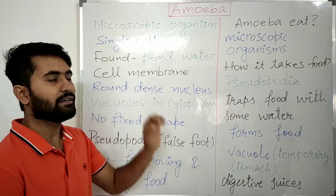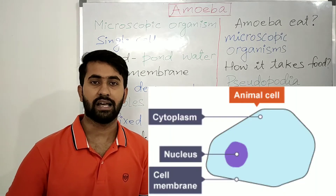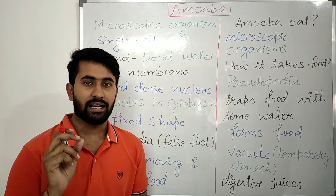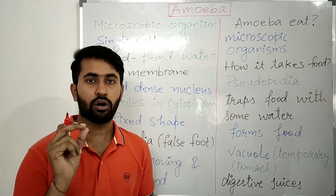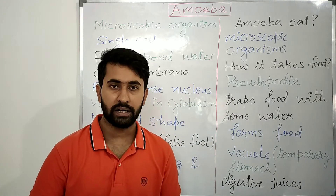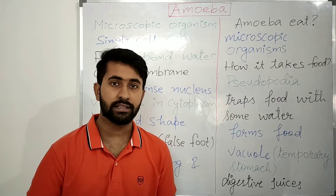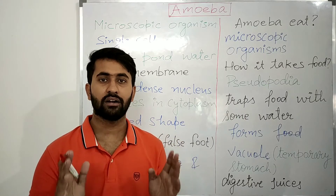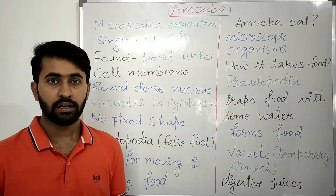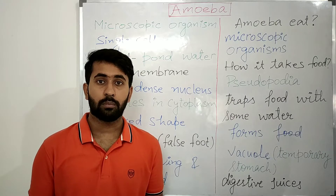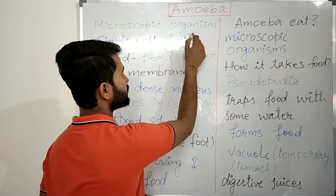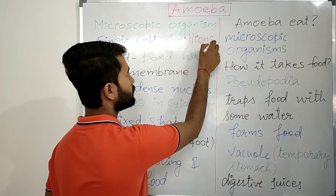Amoeba has a single cell. It is made up of a single cell. A cell is the building block of life — like buildings are made up of bricks, the bodies of all living organisms are made up of cells. Our body is made up of trillions of cells.